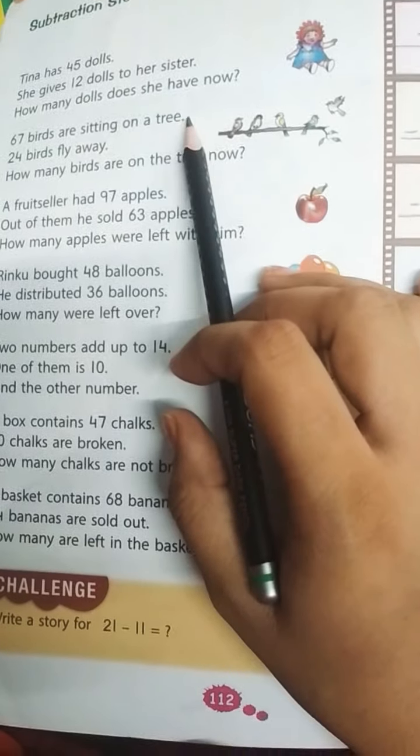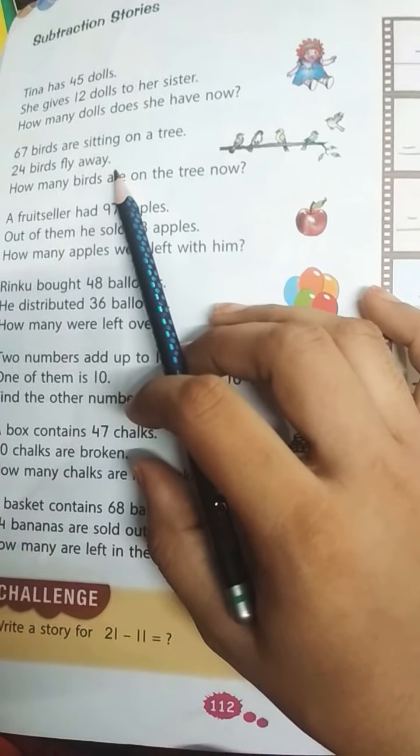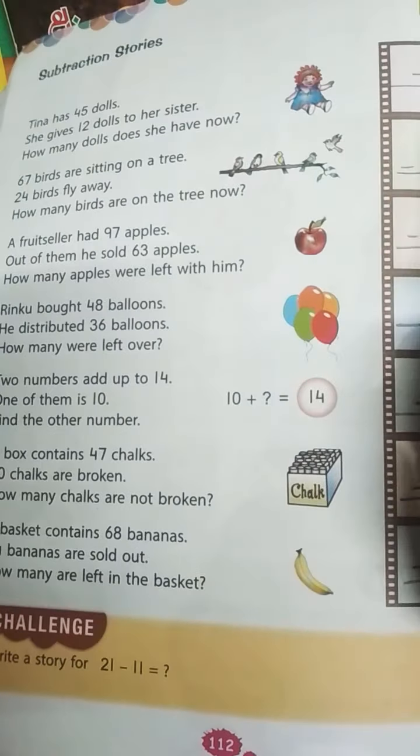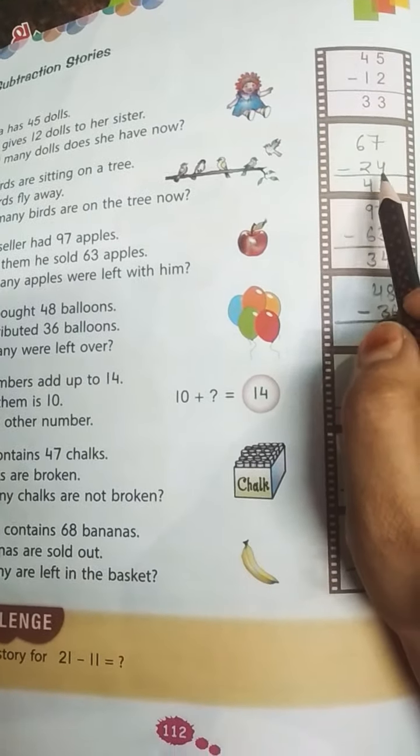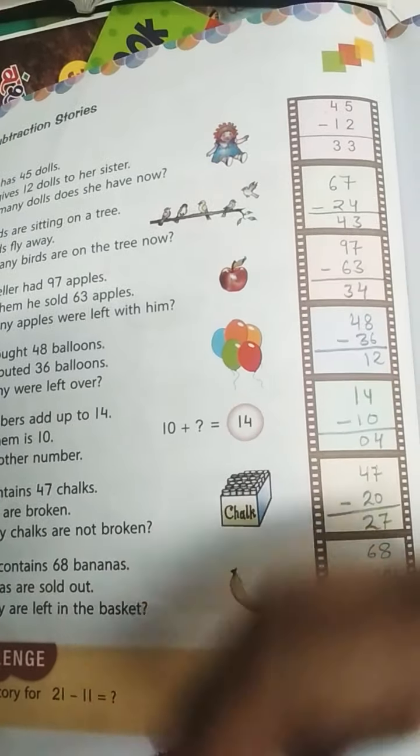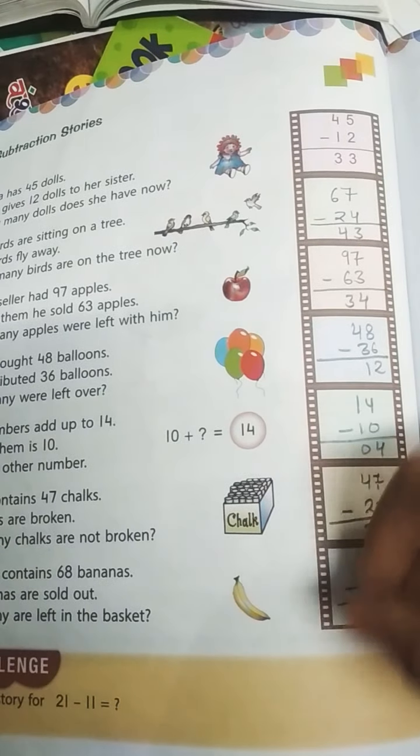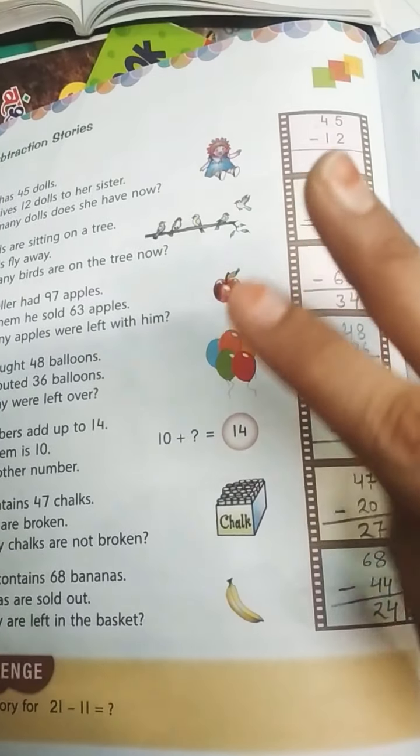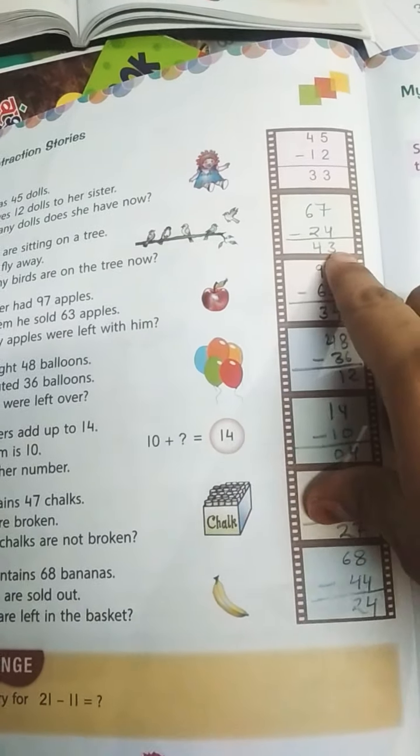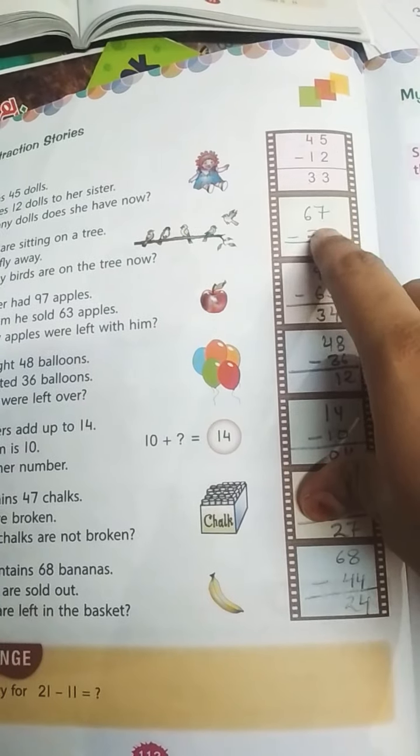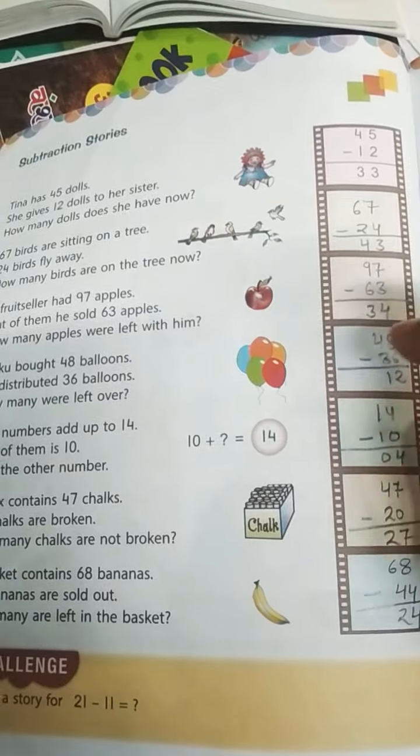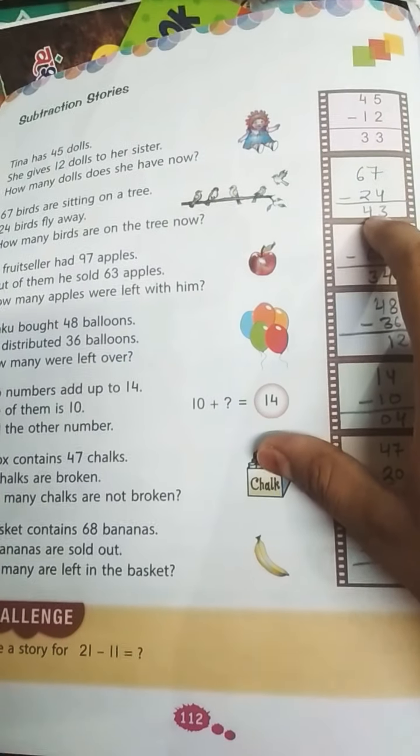The next question is: birds are sitting on a tree, 24 birds fly away, how many birds are on the tree? This is also subtraction, so 67 minus 24. 7 minus 4 is 3. You can count on your fingers: 7 minus 4, count after 4, 5, 6, 7, so 3. We have written here 3. 6 minus 2, count after 2, 3, 4, 5, 6, so 4 is there. You can write here 4. Got it?